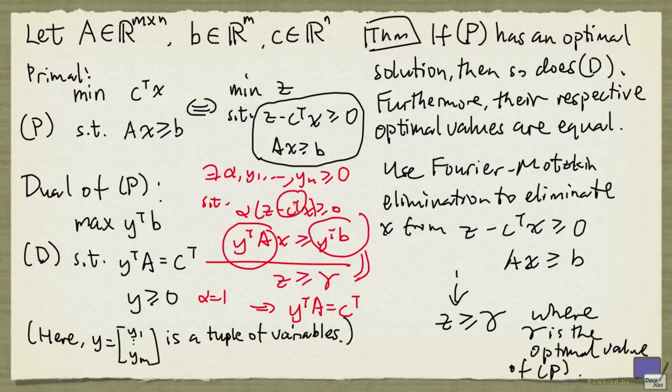And that means, the y we have here is going to be a feasible solution to the dual problem. But we also see that its objective function value, y transpose b, is equal to gamma, which is the optimal value of p. And so we have proved this theorem.